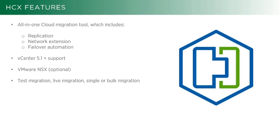Some of the HCX features: it's an all-in-one migration tool. This is going to include your replication, your network extension, and your failover and automation. Whereas you may be familiar with other products like vSphere Replication, SX, or SRM that are kind of standalone products with some interdependencies, this is all-in-one. It takes bits from all of those products and brings them together. HCX has been around for years, just really on the back end — something that VMware gave to solution providers running private clouds to migrate people into and out of. The technology is proven, and it's just now been made available publicly through the VMC offering.